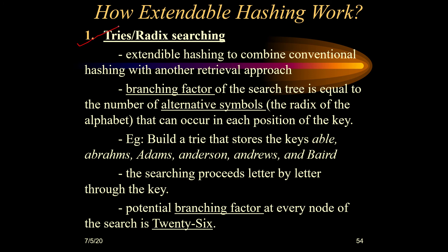The first thing we need to understand is what is trie or radix searching. It is an extension of hashing which introduces another hashing technique inside it. It has a branching factor equal to the number of alternative symbols included in it. These alternative symbols are also known as radix, which is why we call this trie radix searching. The searching is done based upon this radix. We will see how it works with the help of an example.